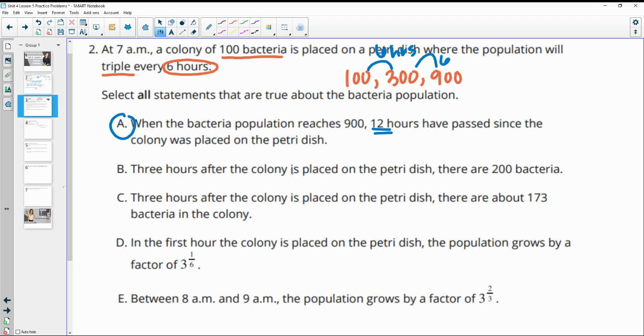B, three hours after the colony is placed on the Petri dish, there are 200 bacteria. So now we're at three hours instead of six hours. So this is three out of three sixths of that tripling period or one half.